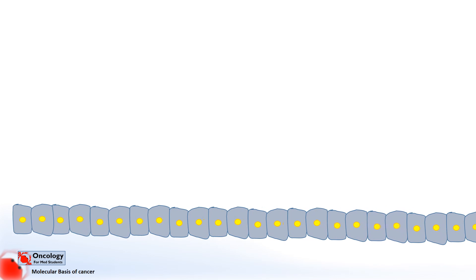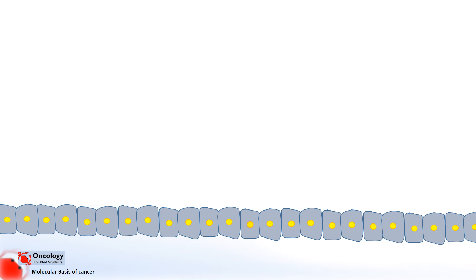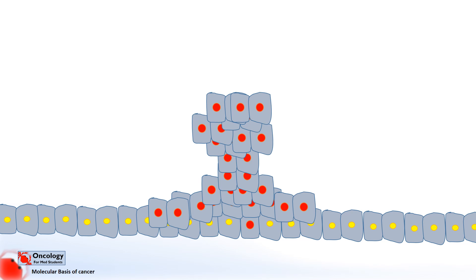The initial mutations allow some cells in the colon to start dividing at a higher rate than cells around it. They eventually grow outwards and form something called an adenoma. An adenoma is a benign tumor of glandular tissue. The adenomas in the colon usually grow inwards towards the center of the tube and form tumors called polyps.